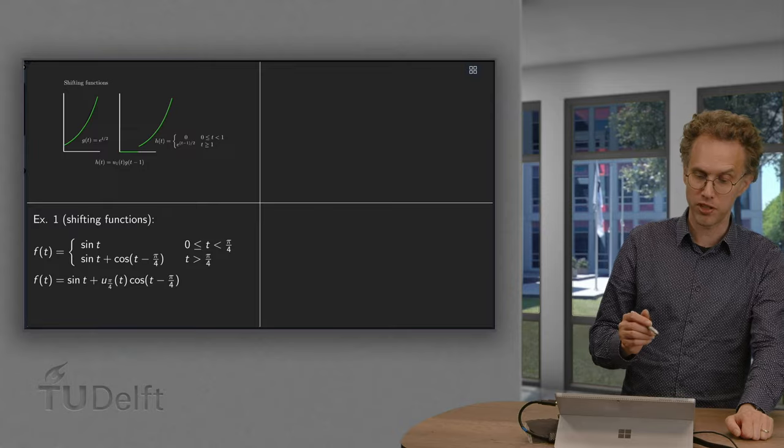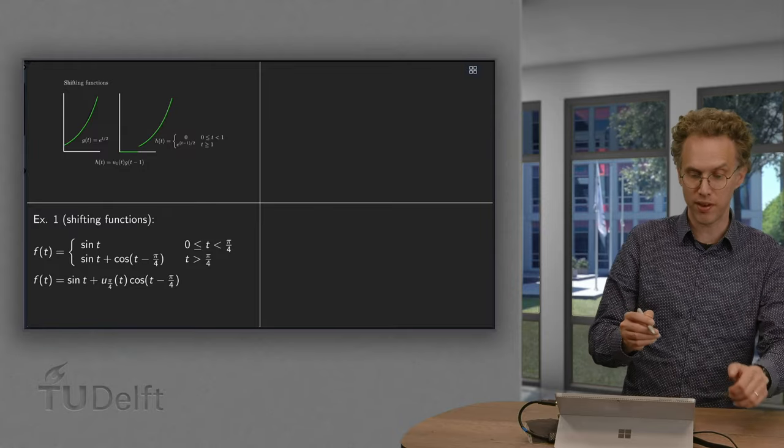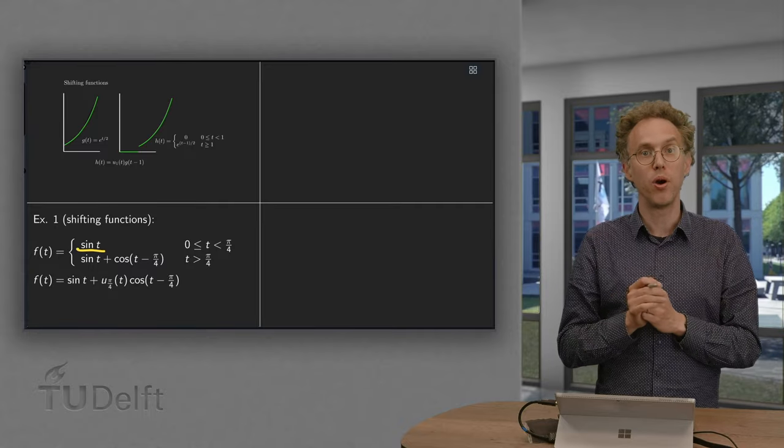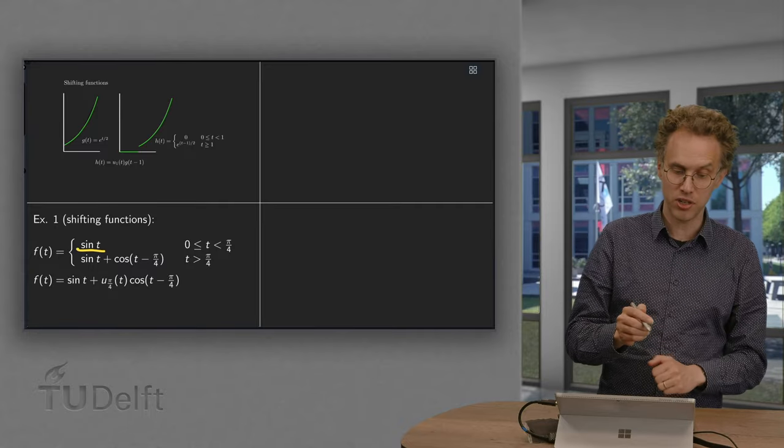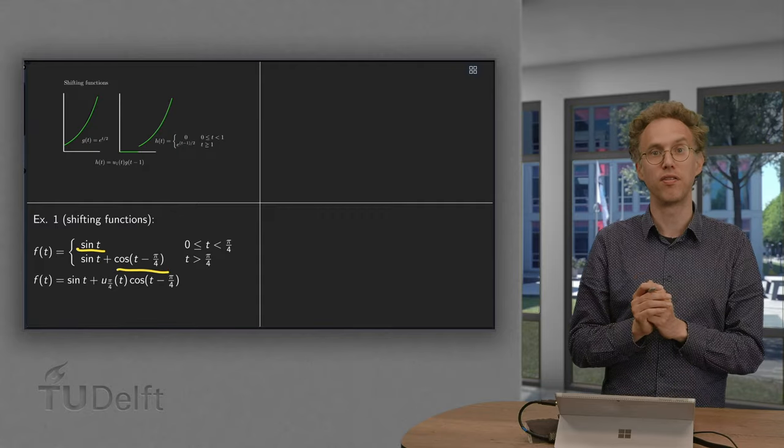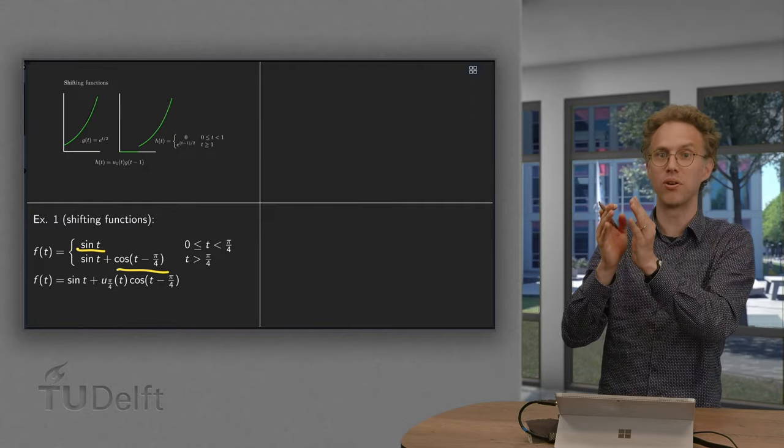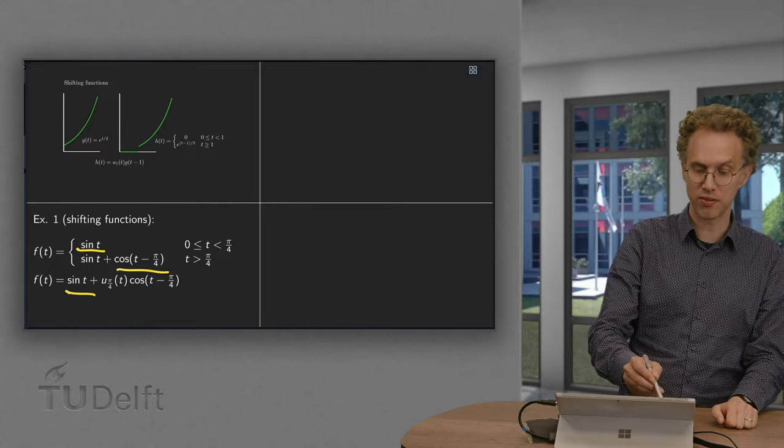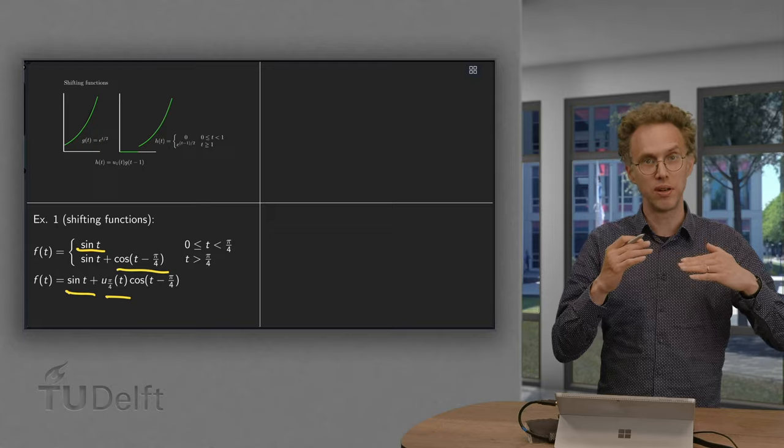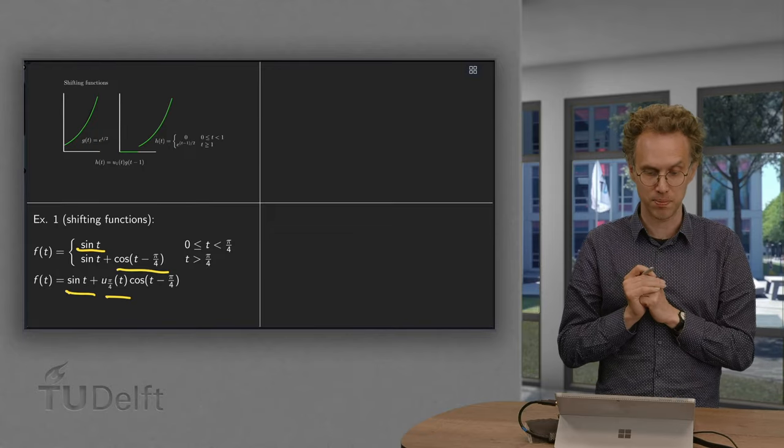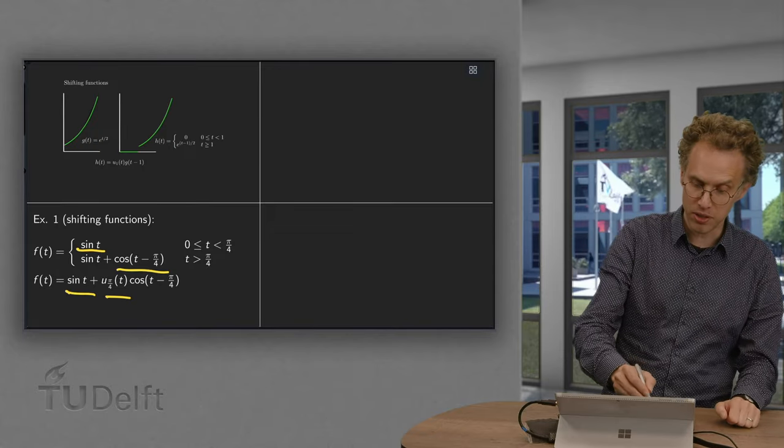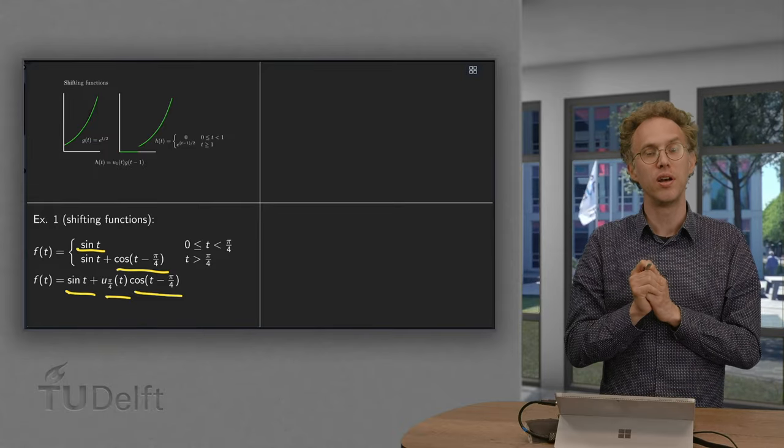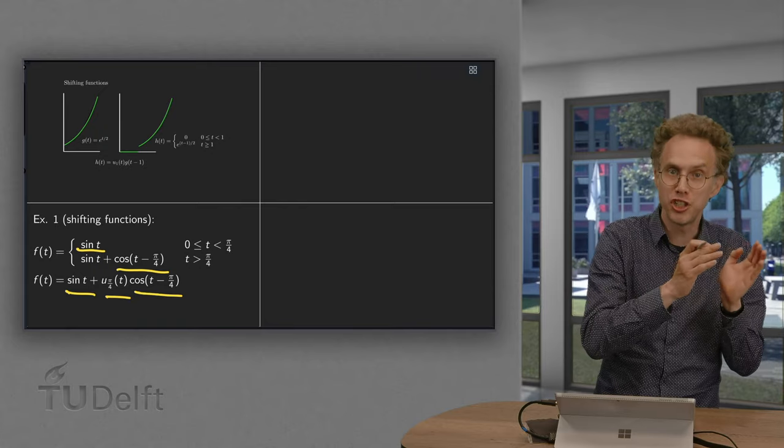One example about shifted functions. Suppose we have f(t) equals sine of t, and then at t equals π/4, we also add a cosine. So we have cosine of t minus π/4. So at t equals π/4, we add a shifted cosine to the function. Now we can rewrite this function f(t) as sine of t plus u(π/4)(t), so this step function is stepping from 0 to 1 at π/4, times cosine of t minus π/4. So this cosine of t minus π/4 makes sure that we have shifted the cosine.